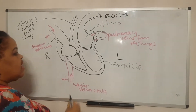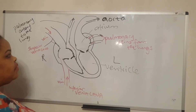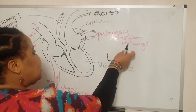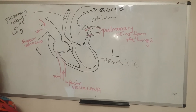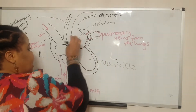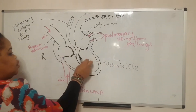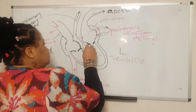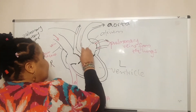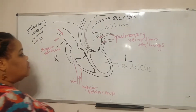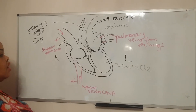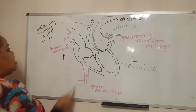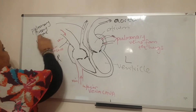The pulmonary veins bring oxygenated blood — blood that is rich in oxygen — into the left atrium. From there it is pushed into the ventricle and then out through the aorta to the rest of the body. The connection from the ventricle into the aorta is there even if my diagram doesn't show it very clearly.